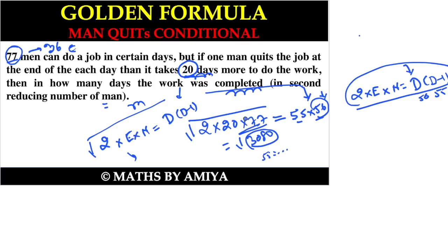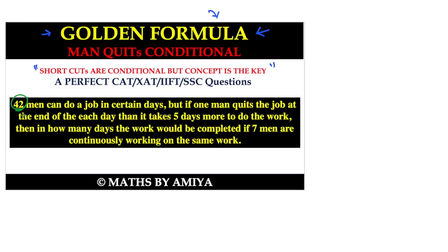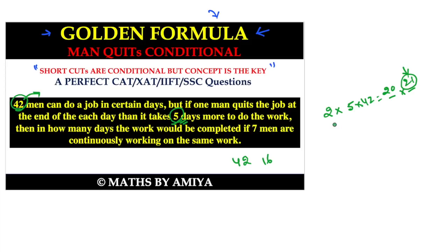Now let's solve the main question. We have 5 × 42 — I need to write this as a product of two consecutive numbers. 2 × 5 × 42 = 420 = 20 × 21. So in the reducing case, it takes 21 days. Since there are 5 extra days in the reducing case, 42 men can complete the work in 21 − 5 = 16 days in the normal case.